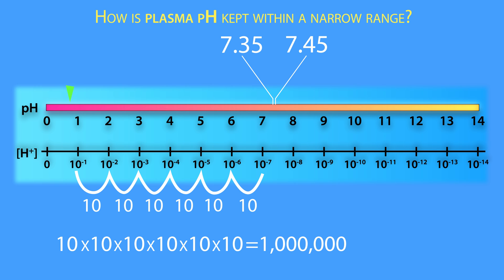Also, a plasma pH of less than 6.8 or greater than 7.9 can be fatal if left uncorrected.